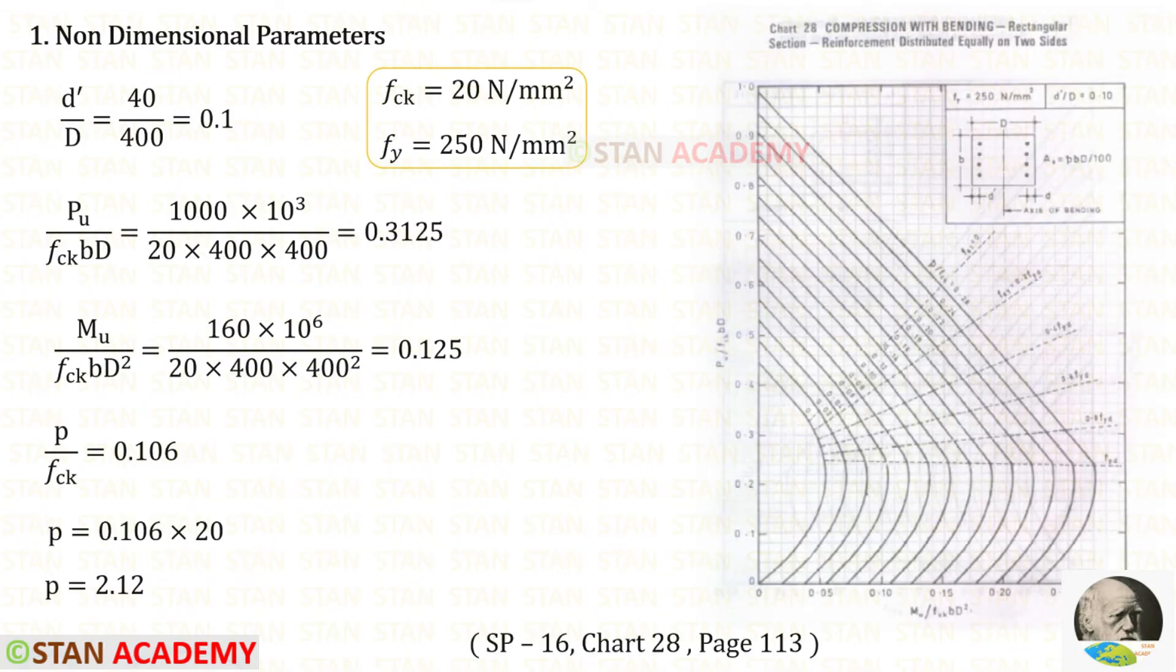Let us assume that the effective cover d dash is equal to 40 millimeter. So for d dash upon d we will get 0.1.